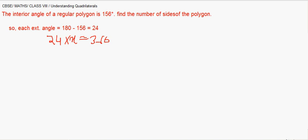So again we go to the same process as we did the previous one. So it will be 24 multiplied by x giving us 360. So x will again be 360 by 24, it will be 15.